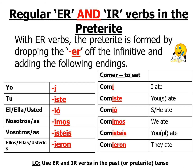So we're going to practice just pronouncing these first — it often helps to do it as a little rhyme. Escucha, repite. Í, iste, ió. Imos, isteis, ieron.